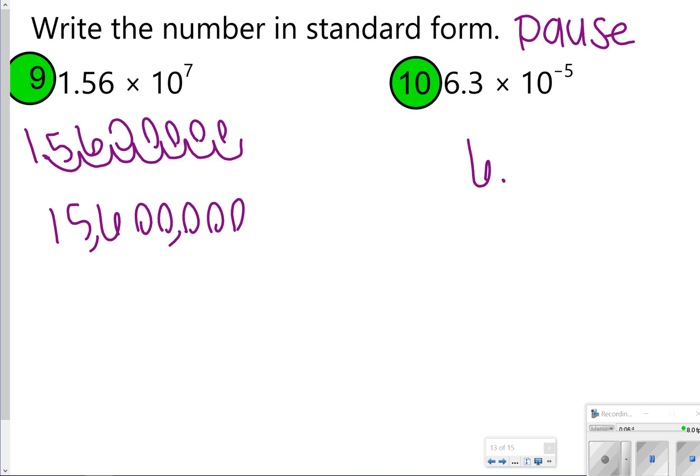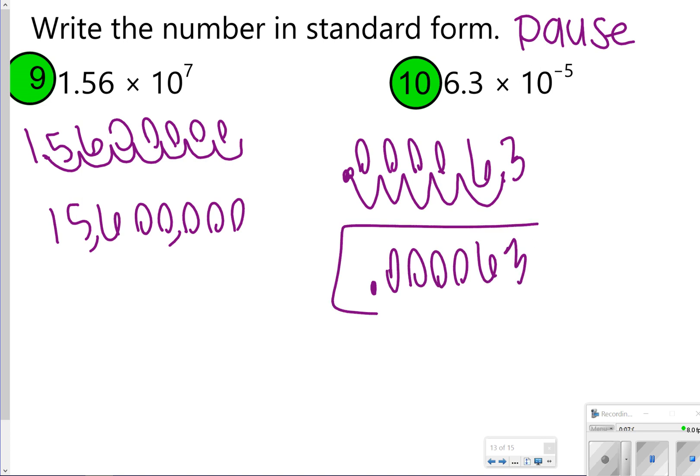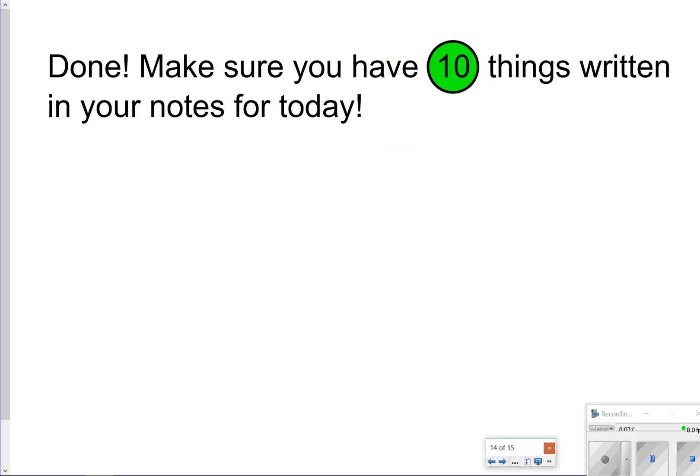And then number 10, we have 6.3, and then moving that decimal five spaces to the left. That's going to be .000063 as my answer. Okay. So that's going to conclude our notes for scientific notation and just reading it. So just make sure you have those 10 things written down in your notes today. Thanks so much for tuning in, and we'll catch you next time.